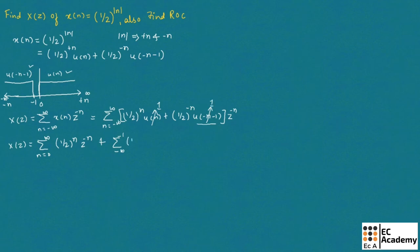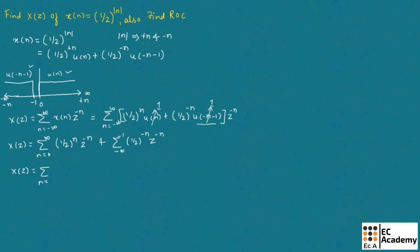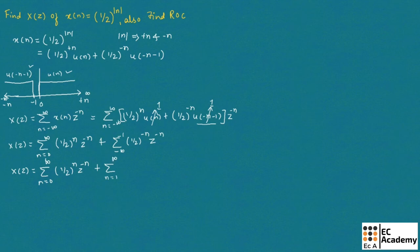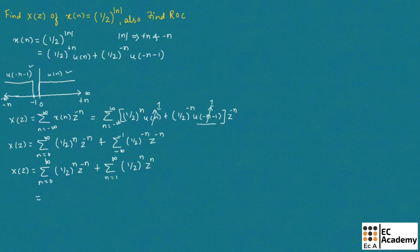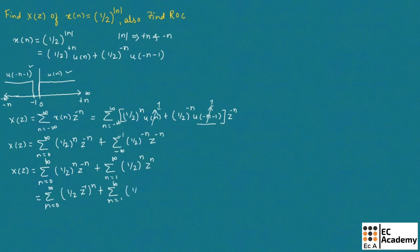For the second term we write 1 by 2 to the power of minus N times Z to the power of minus N. We then rewrite X of Z: the first term is summation N equals 0 to infinity of 1 by 2 times Z inverse, whole to the power of N. For the second term, we change the sign so the limits become N equals 1 to infinity, and 1 by 2 to the power of minus N becomes 1 by 2 to the power of N, and Z to the power of minus N becomes Z to the power of N, giving summation from 1 to infinity of 1 by 2 times Z, whole to the power of N.